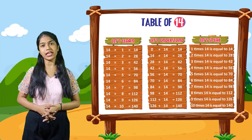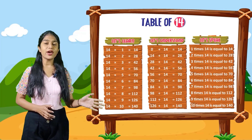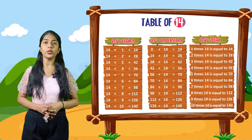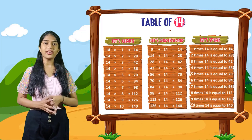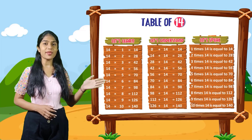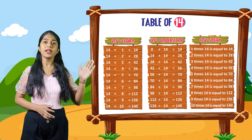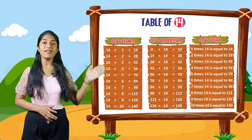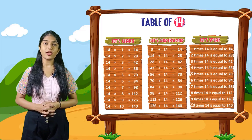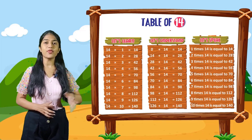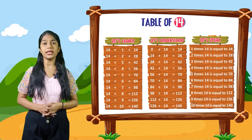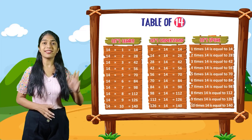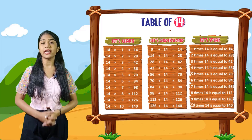So now let's speak. You have to speak out with me. 1 times 14 is equal to 14. 2 times 14 is equal to 28. 3 times 14 is equal to 42. 4 times 14 is equal to 56. 5 times 14 is equal to 70. 6 times 14 is equal to 84. 7 times 14 is equal to 98. 8 times 14 is equal to 112. 9 times 14 is equal to 126. 10 times 14 is equal to 140.